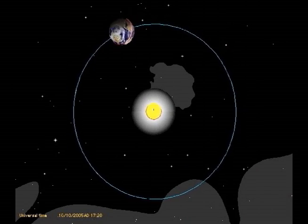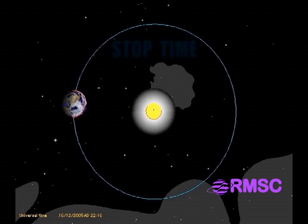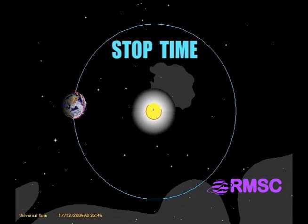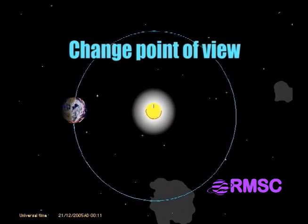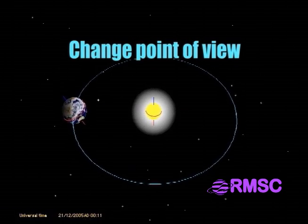Seasons are caused by the tilt of Earth's axis. To see this better, let's stop time and change our point of view. We'll move to a place where we can see that the Earth is tilted compared to its orbit.